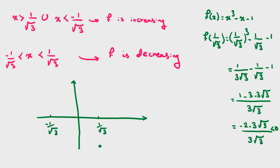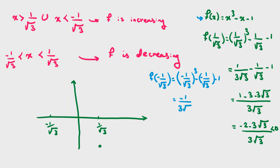Let's compute f of negative 1 over root 3. Using f(x) = x cubed minus x minus 1, it equals negative 1 over 3 root 3 plus 1 over root 3 minus 1. Using a common denominator, this gives 3 root 3 minus 1 plus 3 minus 3 root 3 over 3 root 3. This type of analysis is useful in competitions like AMC, BMO, and HMMT — Harvard MIT Math Tournament.